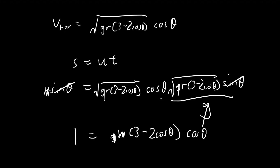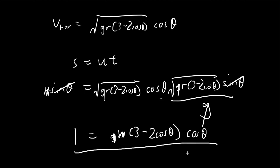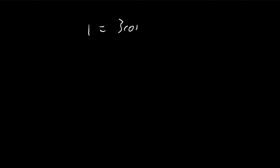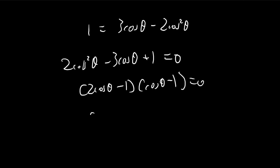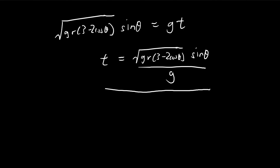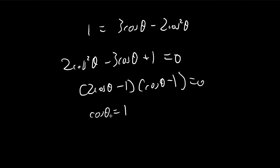The condition we need is 1 equals 3 cosine theta minus 2 cosine squared theta. Writing this as a quadratic equation and factorizing gives two solutions. Cosine theta equals 1, which means theta equals 0 — but this is a spurious solution because at that point the particle would just keep going down with no maximum. So we discard that solution.